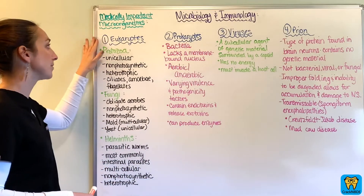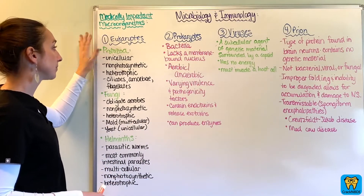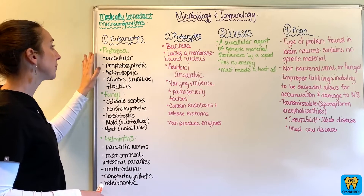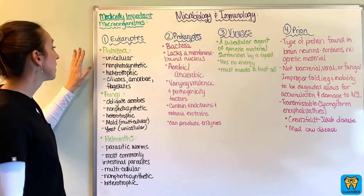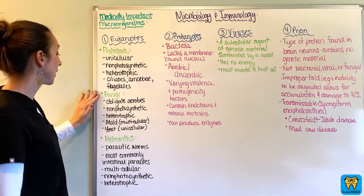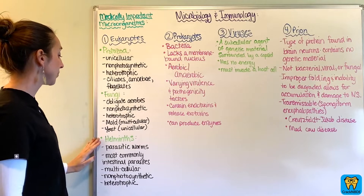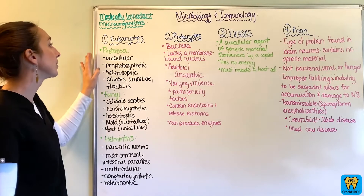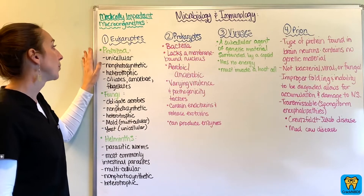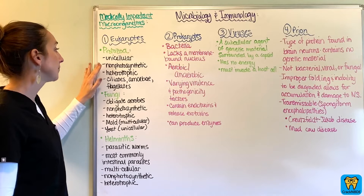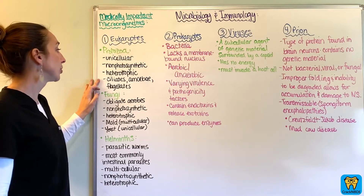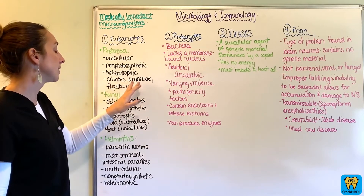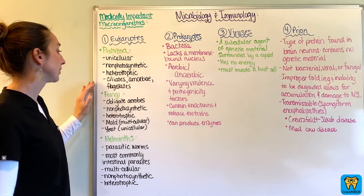So we have our eukaryotes — these are going to be your protozoa, your fungi, and your helminths. Your protozoa will be unicellular, non-photosynthetic, heterotrophic, and they include ciliates, amoeba, and flagellates.